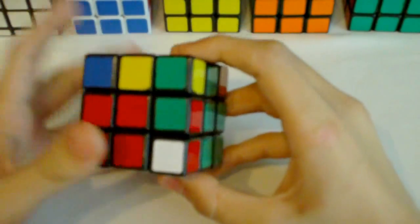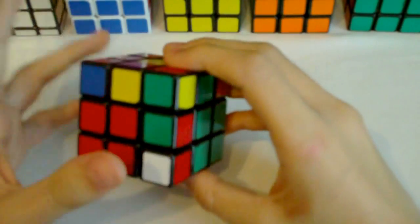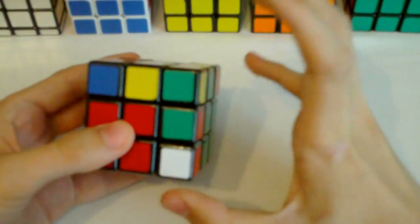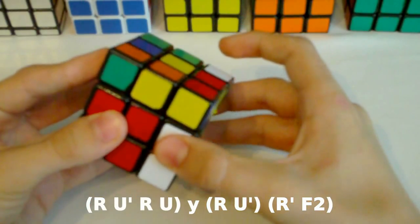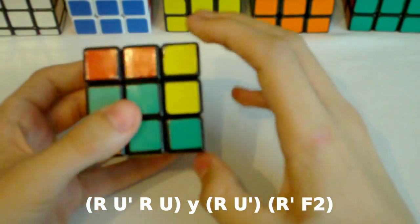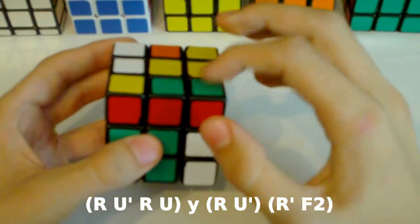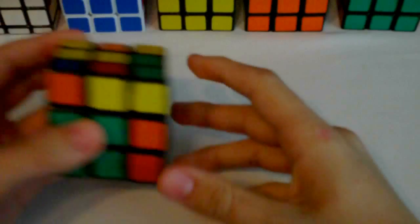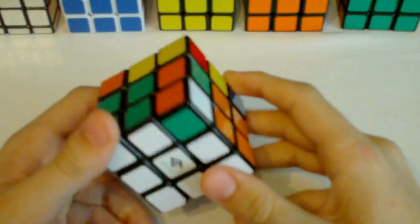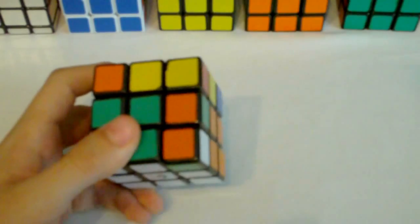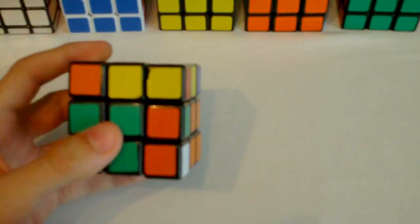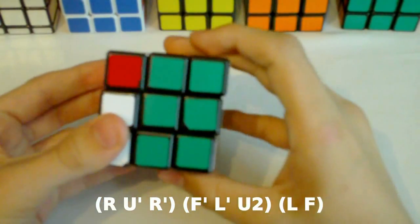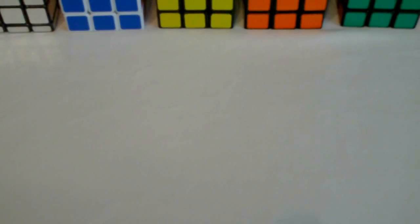Alright this is definitely one of the nastiest f2l cases I have ever seen. I totally hate this case. So you will be very thankful for this algorithm. So here it goes: r u' r u then you do a y rotation then you do r to pair this up and then you finish it off with u' r' f2. And then we have the mirror of that and in this case instead of the matching colors being here they are here. And the algorithm for that is r u' r' f' l' u2 lf. Okay guys those were 12 f2l algorithms.